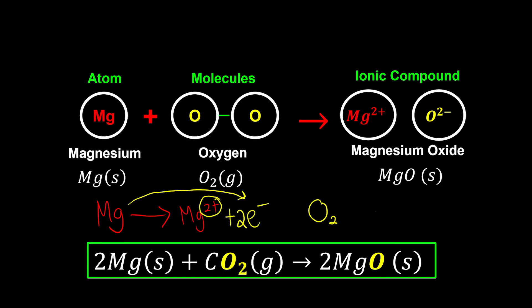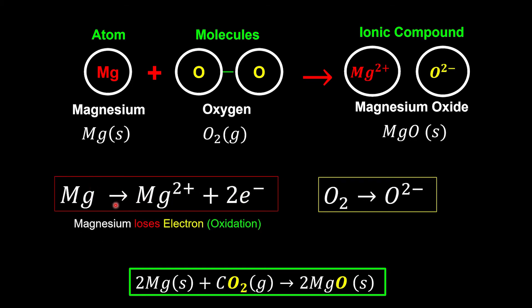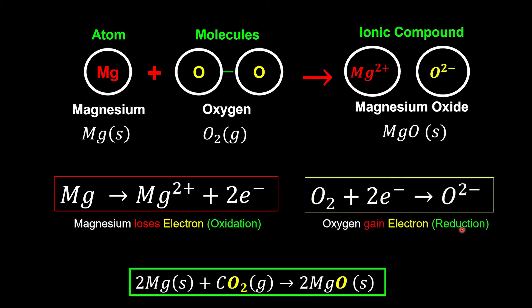Since oxygen becomes 2−, it must have received two negative electrons in the process. We can now write the ionic equations: magnesium starts with no charge and ends as Mg²⁺, meaning it loses electrons — this is oxidation (OIL RIG). So magnesium undergoes oxidation where it loses the electrons. Meanwhile, the oxygen molecule becoming negative means it gains the electrons, so oxygen molecule undergoes reduction.